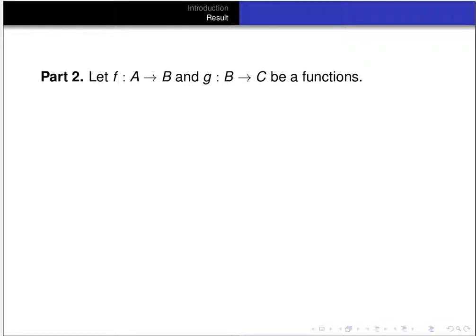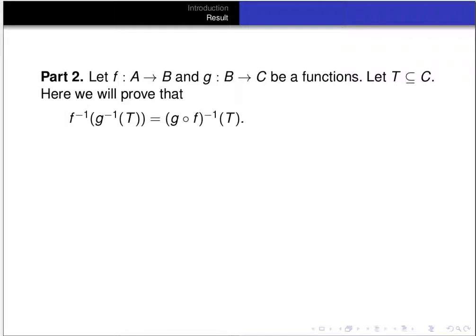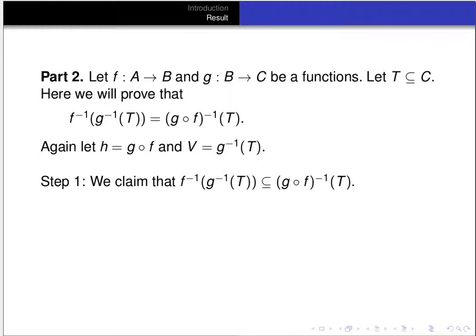Now part two of the theorem. Let f be a function from A to B and g be a function from B to C, and let T be a subset of C. The claim is that the pre-image under f of the pre-image under g of T equals the pre-image of T under g composed with f. Again we have sets on both sides, so we do a set equality proof. Let h be g composed with f, and let V be the pre-image of T under g. First we prove that the pre-image under f of the pre-image of T under g is a subset of the pre-image of T under g composed with f.